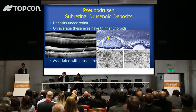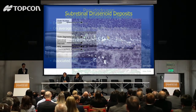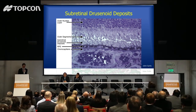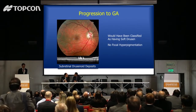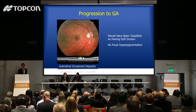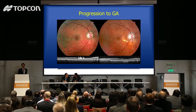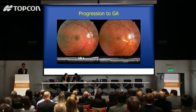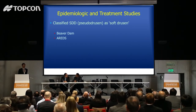We showed that subretinal drusenoid deposits or pseudodrusen were more commonly found in patients with thin choroids, and that they were associated with drusen, neovascularization, and eventual atrophy formation. These patients can progress through a number of different pathways. Here's a patient with some subretinal drusenoid deposits — these would have been classified as soft drusen in every prior study. Notice there's no focal hyperpigmentation, but this patient eventually does develop geographic atrophy.